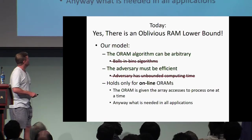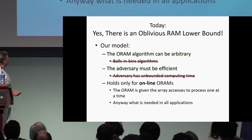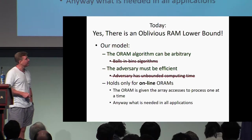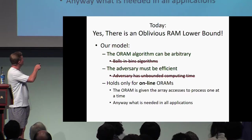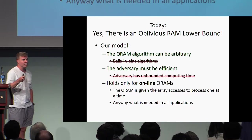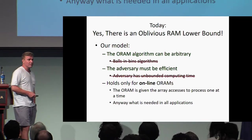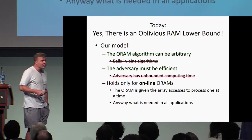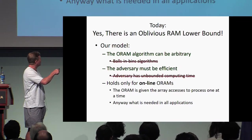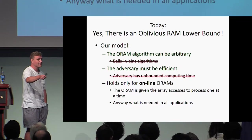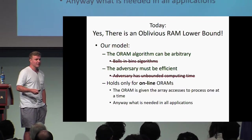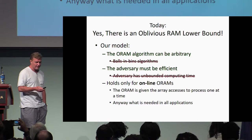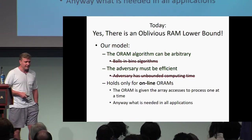So that's what we're doing today. We're going to prove a lower bound of log n for arbitrary algorithms — the ORAM can be arbitrary, we skip the balls-in-bins restriction — and we require only that the adversary is efficient, i.e., polynomial time. The flip side is it only holds for online ORAMs where each access must be simulated when it comes, but that's anyway what we need in practice for the applications.